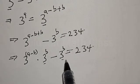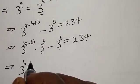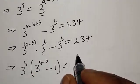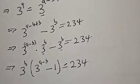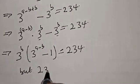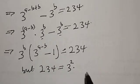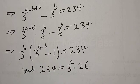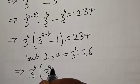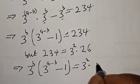Now, 3 raised to power b is common in both terms. We factor it out to get 3 raised to power b multiplied by 3 raised to power a minus b minus 1, equal to 234. This can also be expressed as 3 raised to power b multiplied by 3 raised to power a minus b minus 1, equal to 3 squared multiplied by 26.